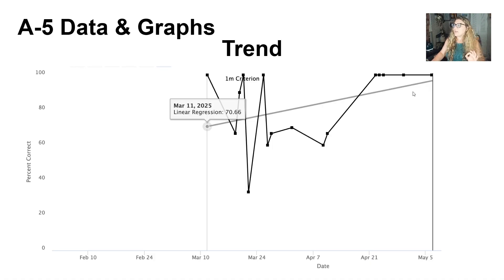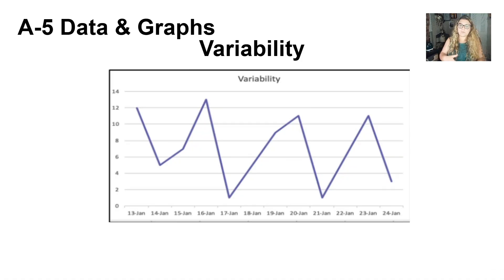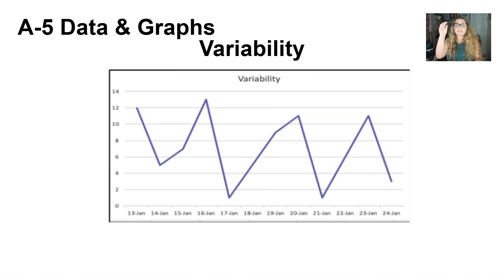The trend line, shown here in gray, starts at a point to show whether behavior is increasing or decreasing, and always follows the data — you can see it's increasing over time. Variability is determined by comparing data points to one another on the graph. High variability makes it difficult to determine if the intervention is working because the data points don't show consistency in trend or level. It's very important to mark your graphs correctly so you can see if your interventions are actually helping the client move forward.